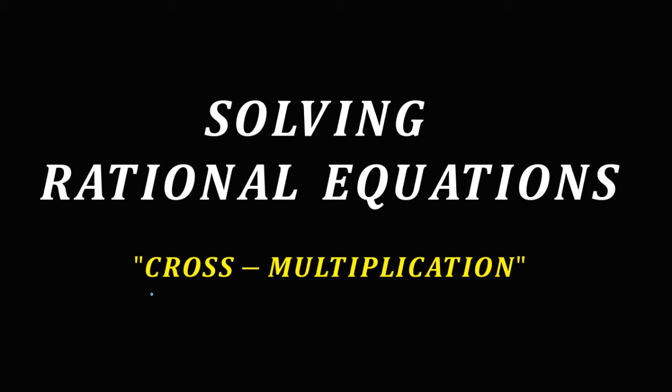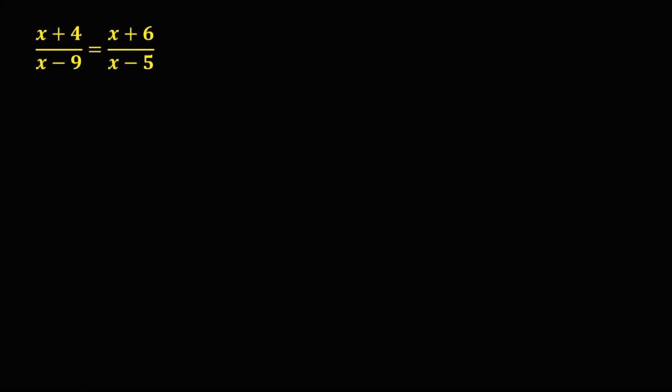Let's solve rational equations by cross multiplication. In solving a rational equation, if we have only two rational expressions — that is, we are equating two rational expressions — we can solve it by cross multiplication. So multiply x plus 4 and x minus 5, and that's the product of negative 9 and x plus 6.